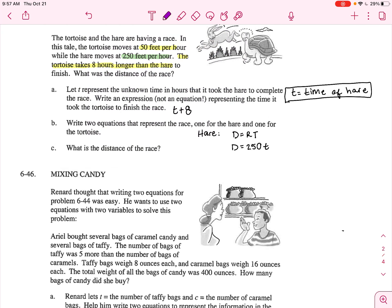Well, what about the tortoise? The tortoise. Well, we're going to use distance equals rate times time. We don't know the distance. The rate of the tortoise was only 50 feet per hour. The time of the tortoise, well, we said that the time of the tortoise was the hare's time plus eight. So let's put T plus eight.